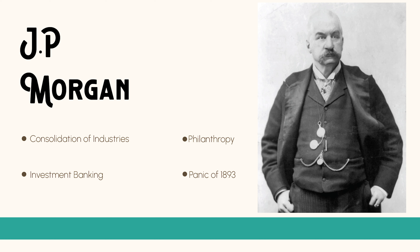J.P. Morgan was born in 1837 in Connecticut and started his career as a banker. He later expanded his business interests to include investments and mergers, becoming one of the most powerful financiers in American history. Morgan's contributions to the Reconstruction era can be seen in his role as a financier and investor. He was known for his innovative approach to finance, which included underwriting large-scale infrastructure projects such as railroads and steel mills. His investments helped shape America's economy and enabled the creation of large-scale infrastructure projects.